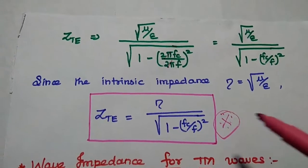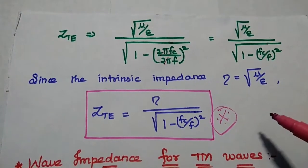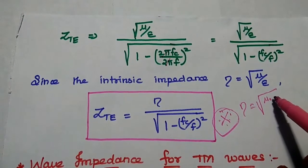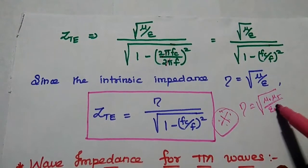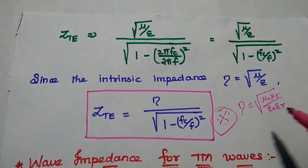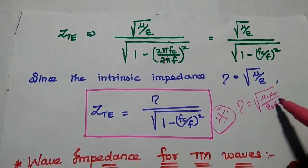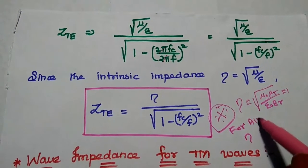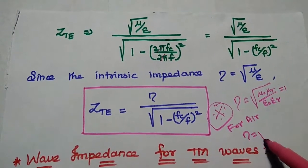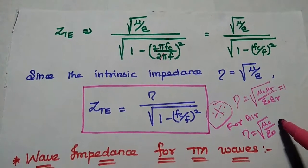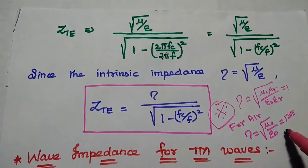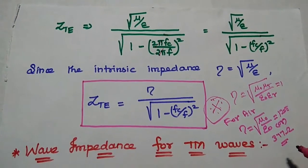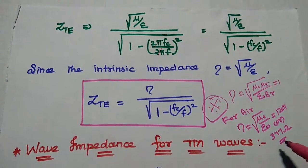This is a very important formula. The square root of mu by epsilon is the intrinsic impedance, denoted as eta. So the wave impedance for TE waves is eta divided by the square root of 1 minus (f_c by f) squared. Here, eta equals the square root of mu naught mu_r by epsilon naught epsilon_r. For air-filled material, mu_r and epsilon_r are both equal to 1, so eta equals the square root of mu naught by epsilon naught, which is approximately 120 pi or 377 ohms — the intrinsic impedance of air.